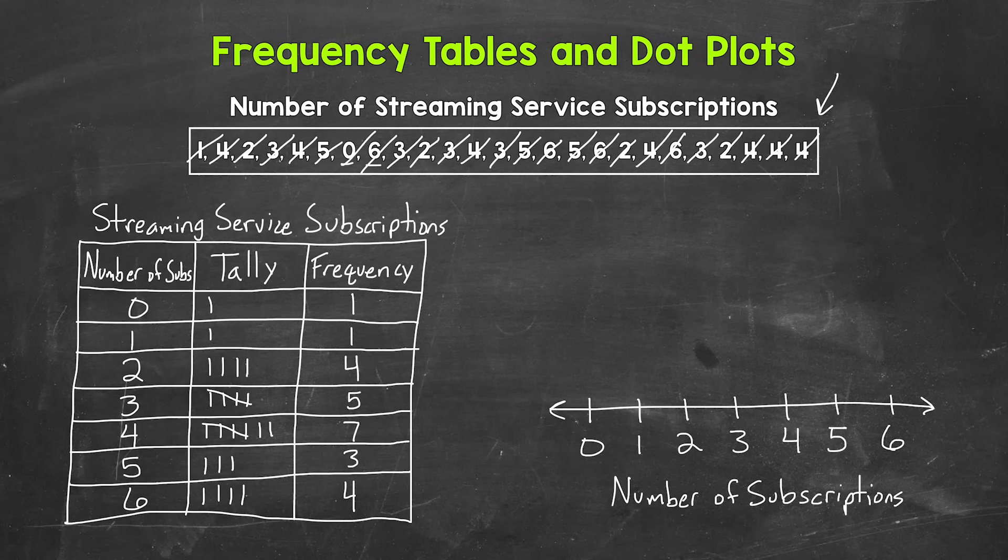Now we need to draw dots for the data. Let's start with zero subscriptions. So how many people have zero subscriptions? Well, one. That means we need one dot above zero to represent that person. Let's move on to one subscription. How many people? Well, one person. So we need one dot above one as well. How about two subscriptions? We have four people, so we need four dots. One, two, three, four. Three subscriptions, we have five people. So we need five dots. One, two, three, four, five.